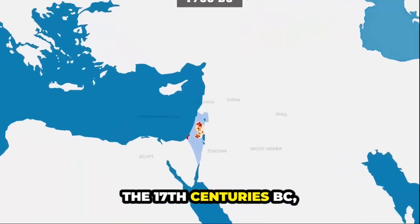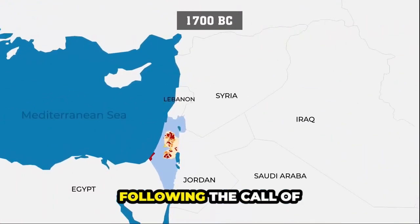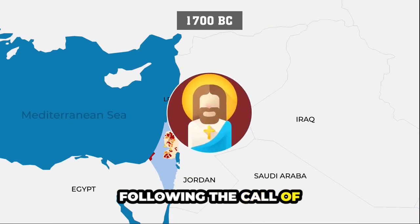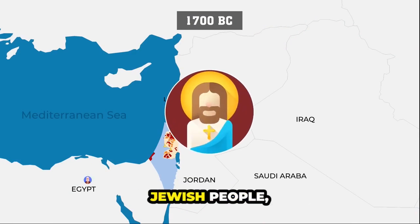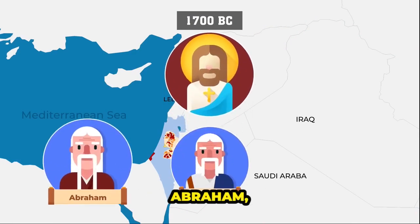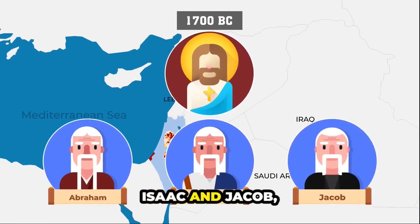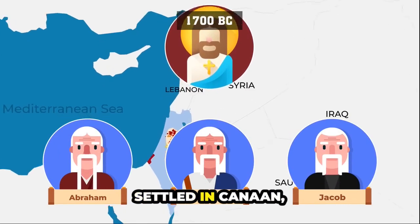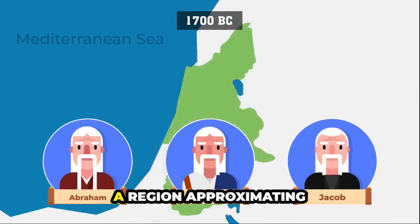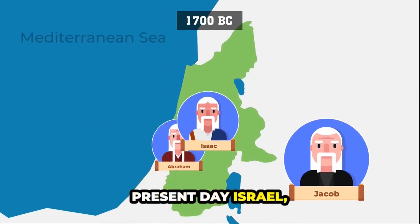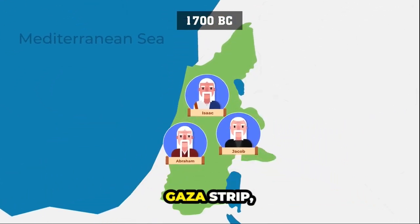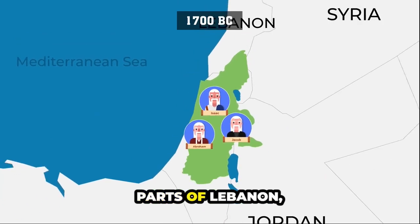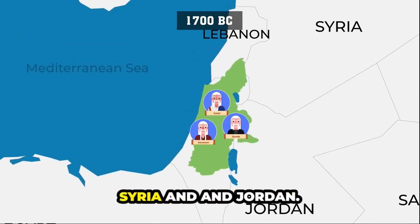In the 17th centuries BC, following the call of God, three patriarchs of the Jewish people — Abraham, Isaac and Jacob — settled in Canaan, a region approximating present-day Israel, the West Bank and the Gaza Strip, parts of Lebanon, Syria and Jordan.